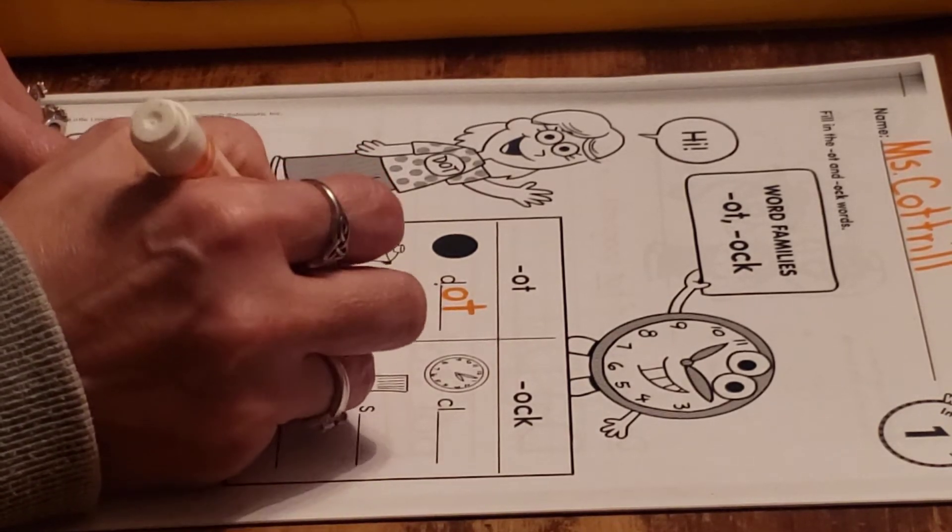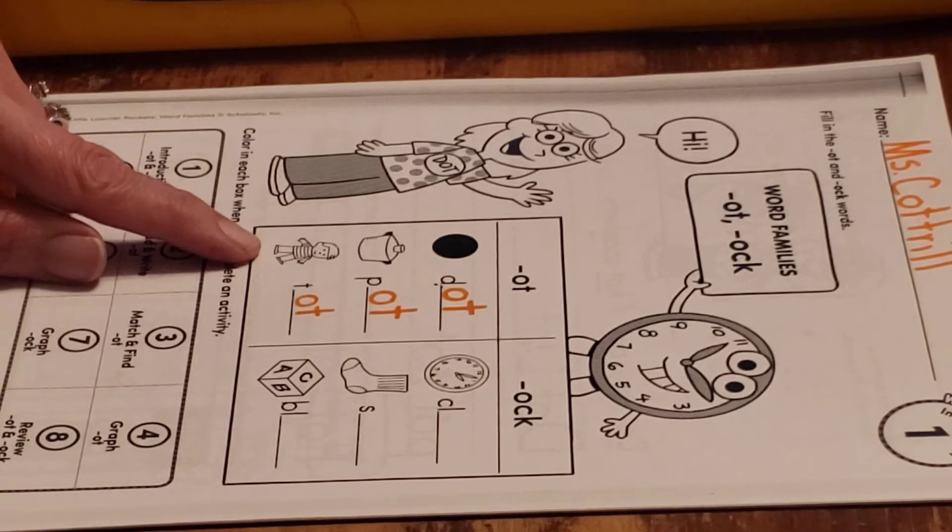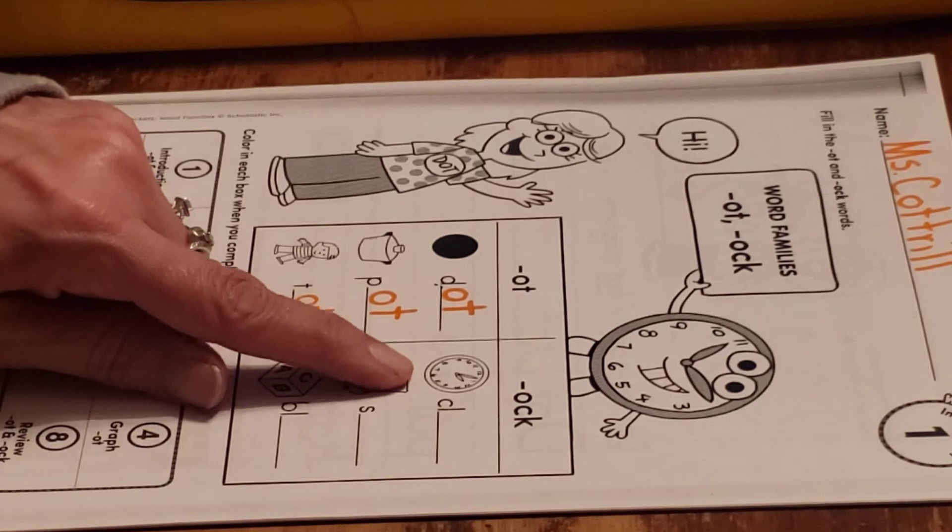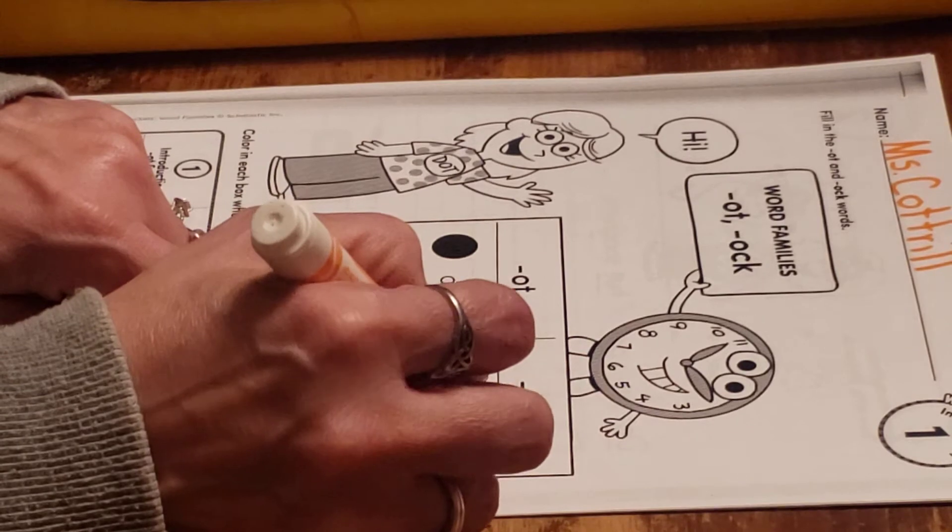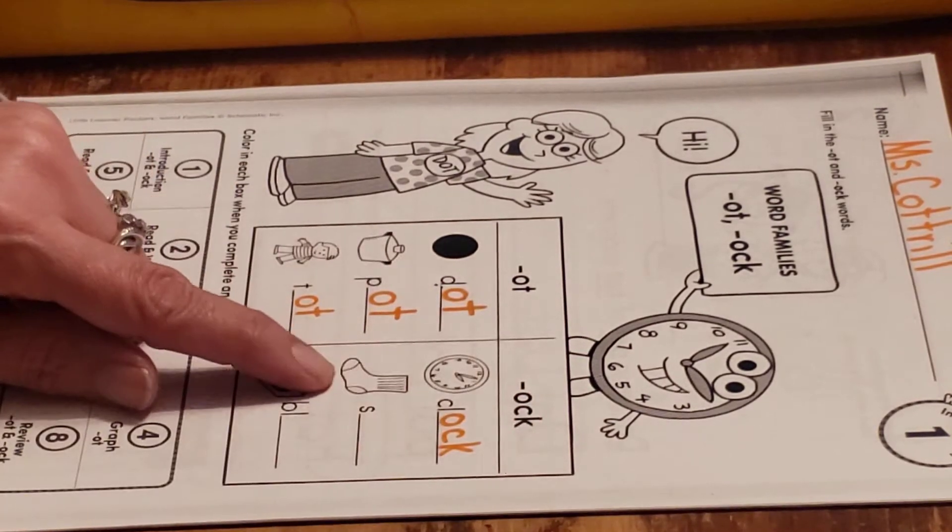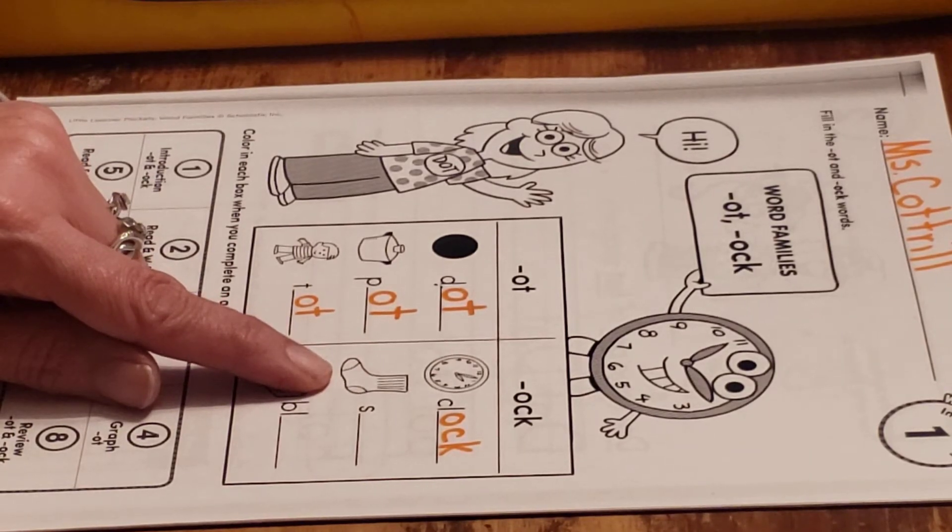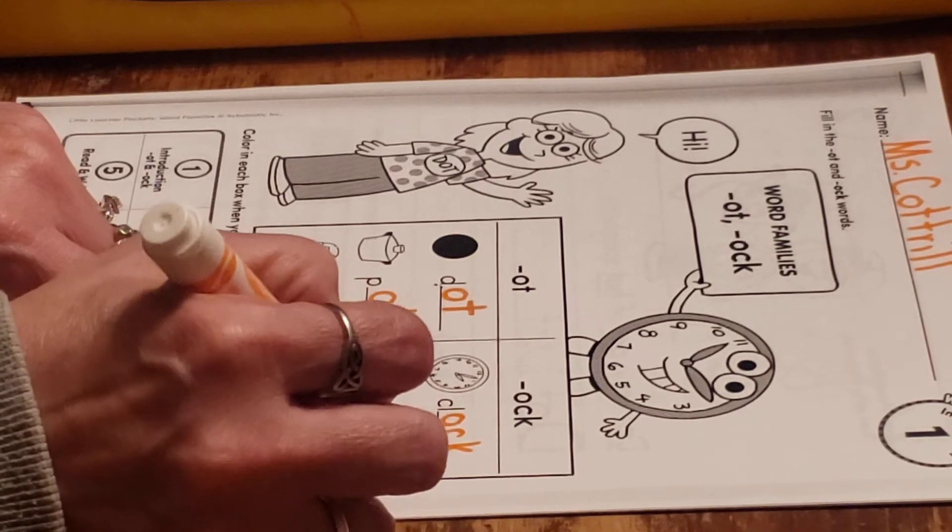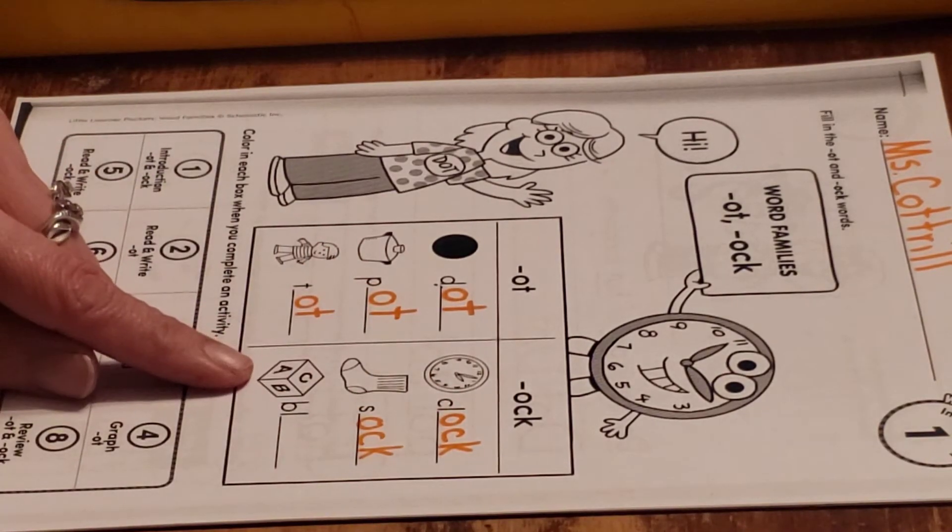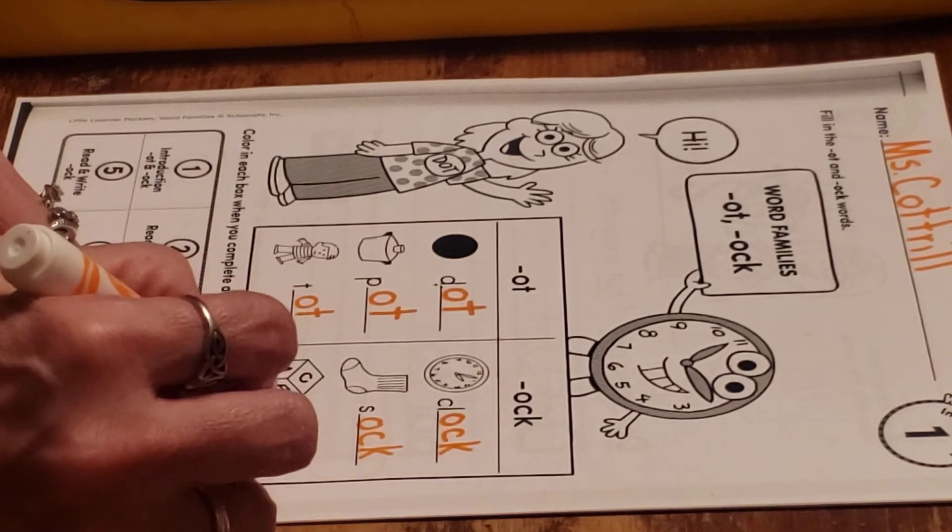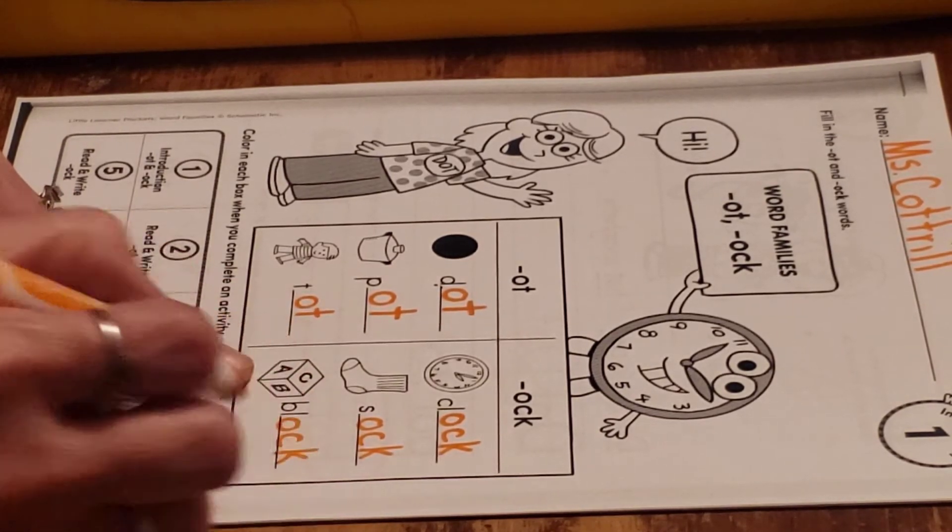T-O-T, tot. Now let's go up to our 'ock' side. This is a clock, C-L-O-C-K. This is a shock, S-H-O-C-K. And this is a sock, S-O-C-K. And this is a block, B-L-O-C-K, block.